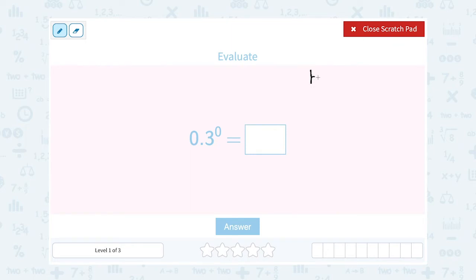Now remember, anytime you have an exponent, you set it up by multiplying the base by itself, the exponent number of times. But this one is actually a special case. Any number to the 0 power equals 1.